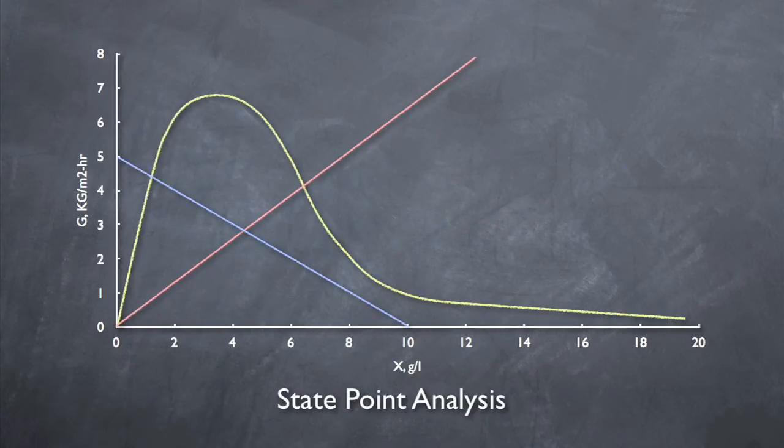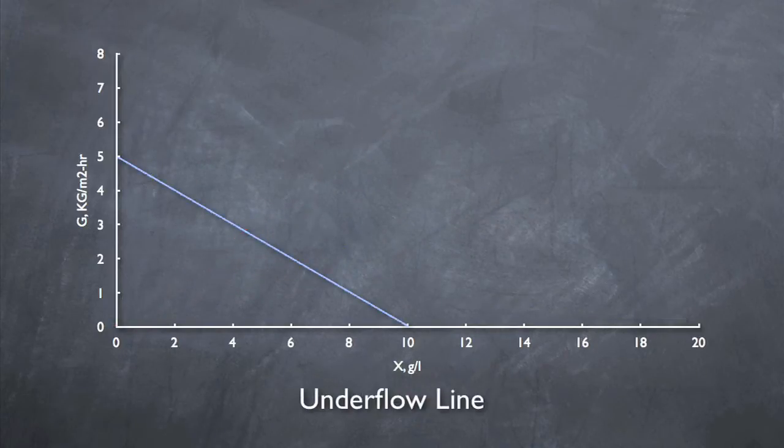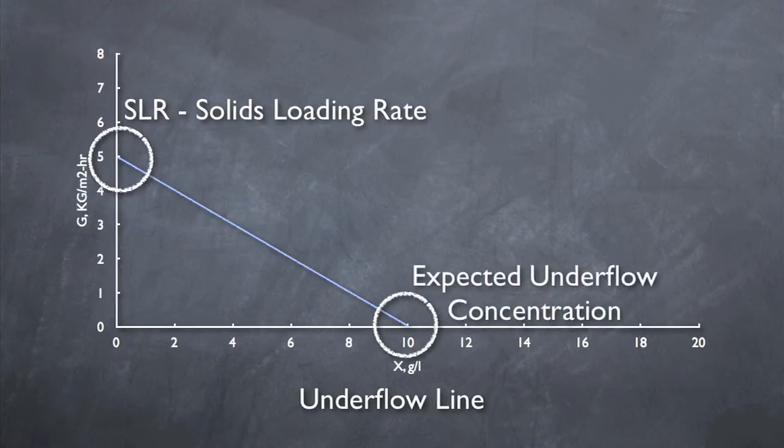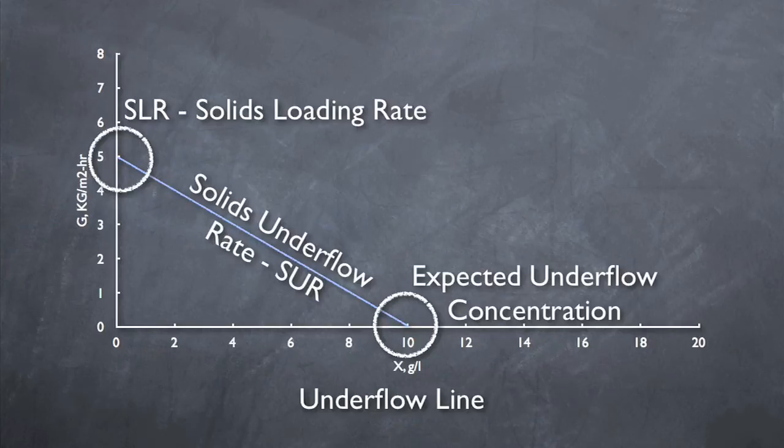The third and final component of the state point diagram is the underflow line. The y-intercept of this line represents the solids loading rate, or SLR. The x-intercept of this line represents the expected underflow concentration. The slope represents the solids underflow rate, or SUR, which is calculated by dividing the RAS flow by the clarifier surface area.